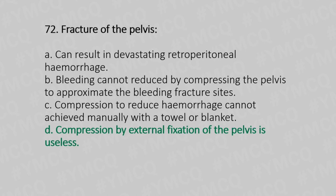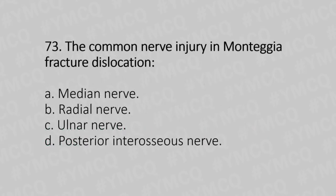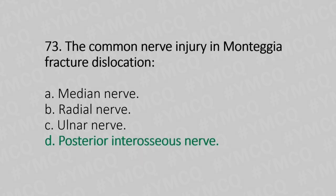Now let's move to question number 73. The common nerve injury in Monteggia fracture dislocation. Option A: median nerve. Option B: radial nerve. Option C: ulnar nerve. Option D: posterior interosseous nerve. And the answer is Option D, posterior interosseous nerve.